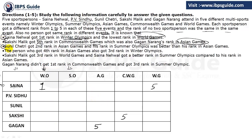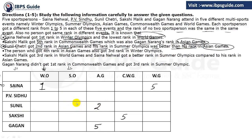Sunil Jatari got second rank in Asian Games, so we place 2 there. His rank in Summer Olympics was better than his rank in Asian Games. Since he got rank 2 in Asian Games, his Summer Olympics rank must be 1, because there is no rank better than 1. So we place 1 for Sunil in Summer Olympics.